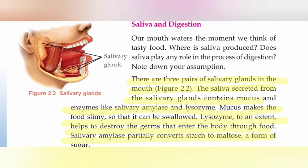What role does saliva play in digestion? There are 3 pairs of salivary glands in the mouth. The saliva secreted from the salivary glands contains mucus and enzymes like salivary amylase and lysozyme.